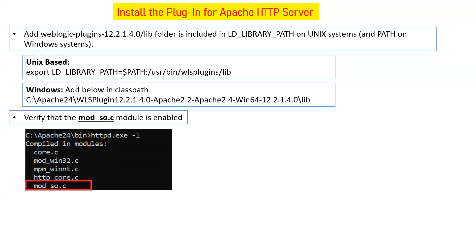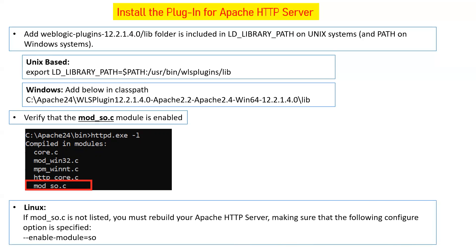Once done, verify that the 'mod_so.c' module is enabled by running 'httpd.exe -l', which lists all modules compiled for your Apache web server. Make sure 'mod_so.c' appears in the list. On Unix-based systems, if 'mod_so.c' is not displayed, it means your compilation was not done properly, or you did not use the '--enable-module=so' parameter during compilation. In that case, go back and run all three compilation commands again, then re-run 'httpd.exe -l' to verify.